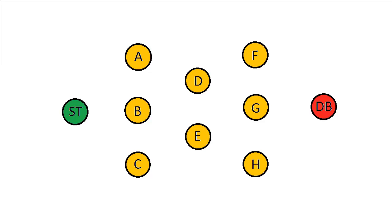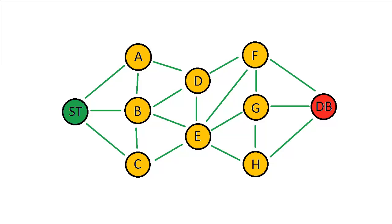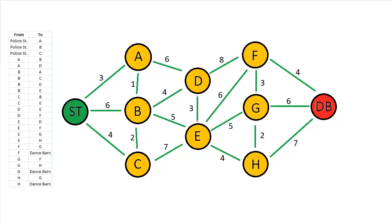Like any other network problem, we draw in our links from node to node so we know exactly which paths are possible. Here is our map with those links drawn in. Remember, links mean travel can occur in both directions, so there are actually more node pairs in terms of travel than there are links drawn on the map. Of course, the links don't mean much without distances, so here is our map with the distances drawn in as well.